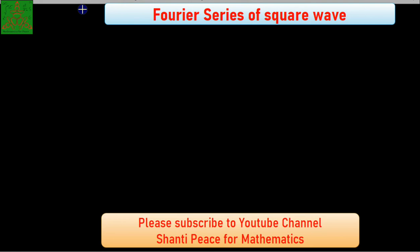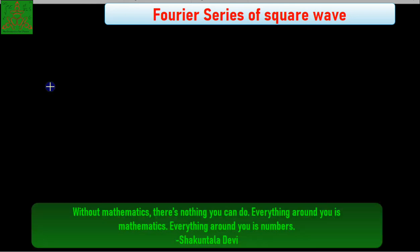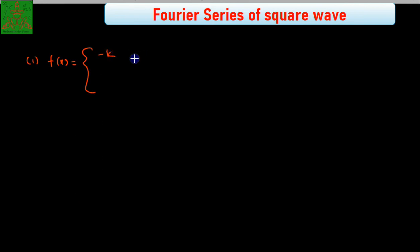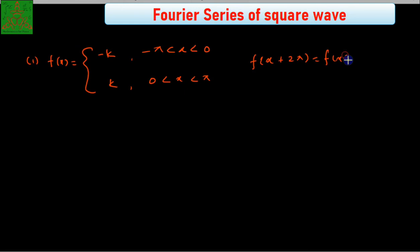Welcome to Sante Peek's Formal. In this video we are discussing examples on the Fourier series. The first example is the square wave, which is defined as f(x) equal to minus k in the interval minus pi to 0, and k from 0 to pi. It is the periodic function, that is f(x + 2π) = f(x). The question is to calculate the Fourier series for this function.